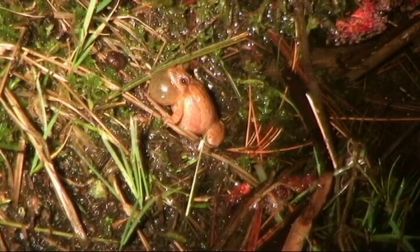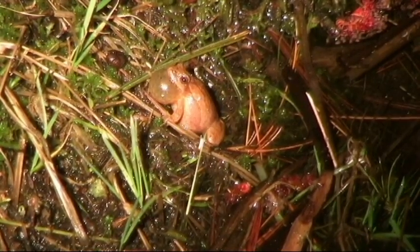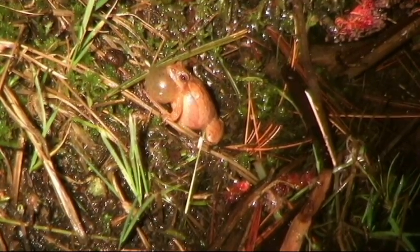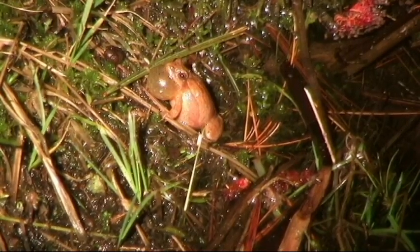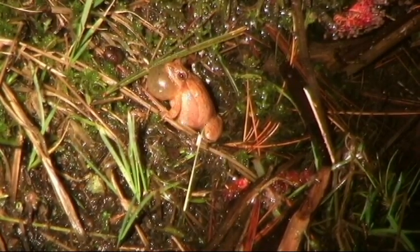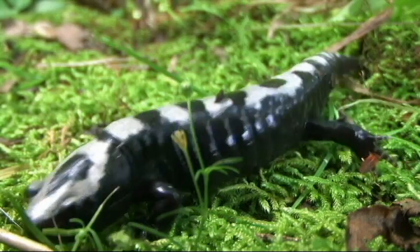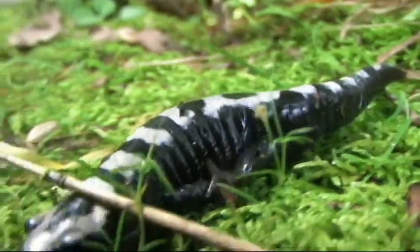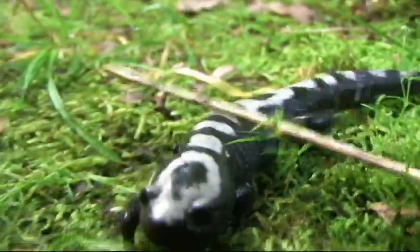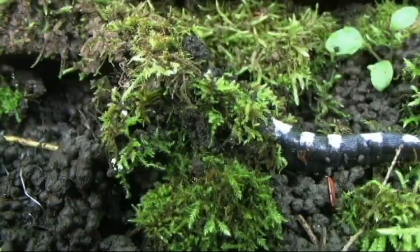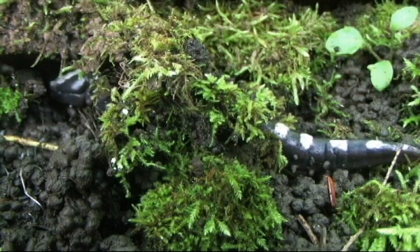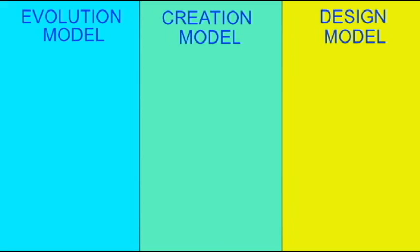If the evolutionary model is correct, modern amphibians have not always existed. When we examine their fossils, we would find ancestral forms long before we find any amphibians, and we would find simple amphibians before the complex and modern amphibians.